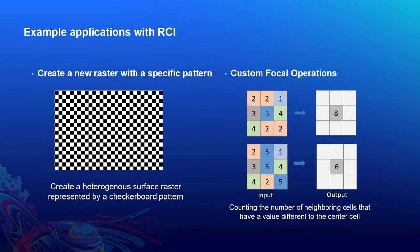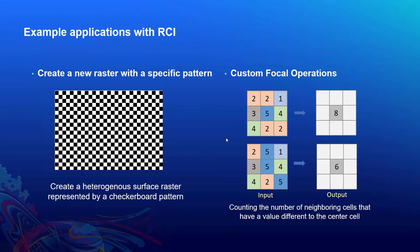RCI can be used to solve many types of problems. Two examples include: creating a new raster with a specific pattern, like a checkerboard pattern, which requires establishing a relationship between pixel values and row/column indices — RCI makes this easy because you get row/column information each time you access a pixel value. The second example is custom focal operations, such as counting the number of neighboring cells that have a different value than the center cell. RCI is very suitable for this type of problem.